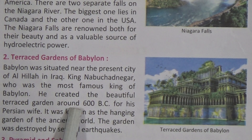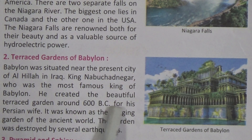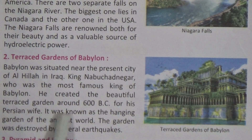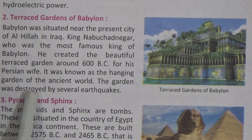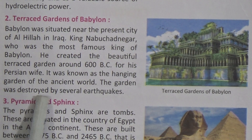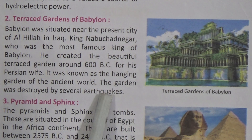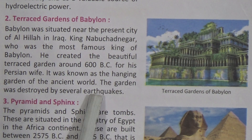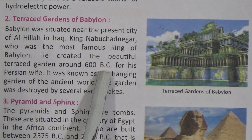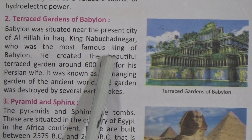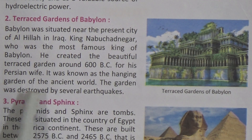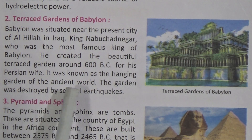The garden was created around 600 BC for his Persian wife. It was known as the Hanging Garden of the ancient world. The garden was later destroyed by several earthquakes, so it no longer exists today.